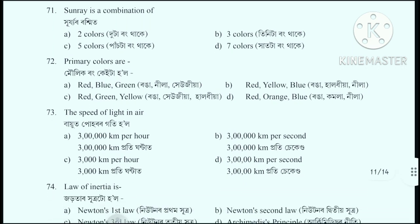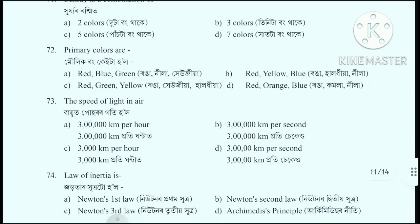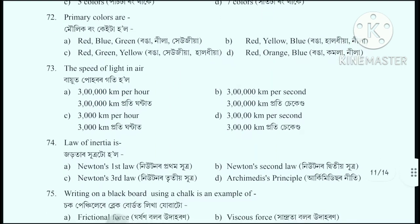Question number 72: Primary colors are - how many primary colors are there? There are three. The correct answer is option B: Red, Yellow, and Blue.